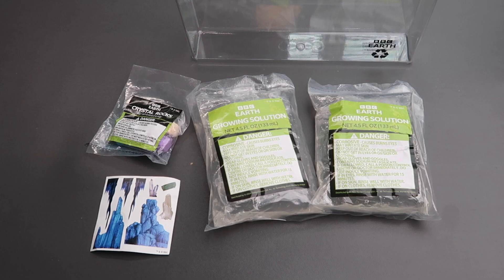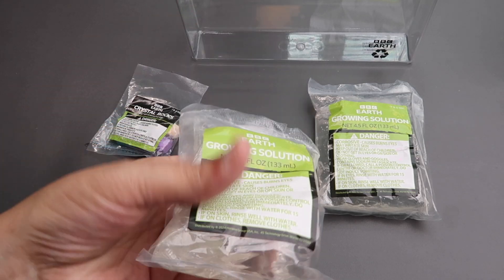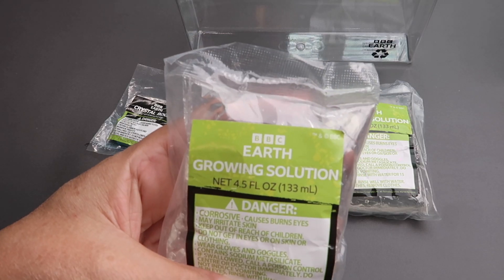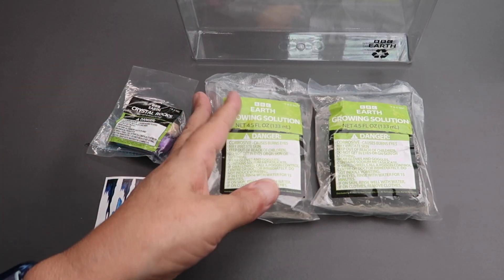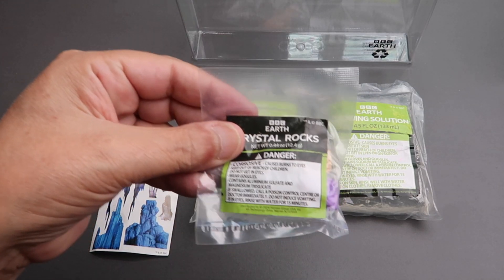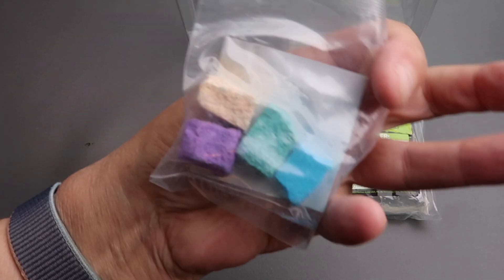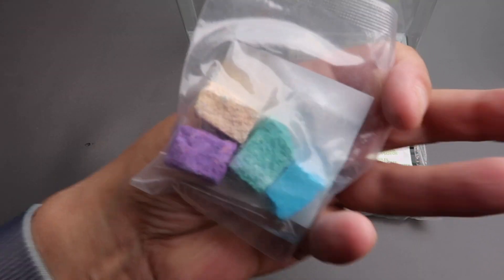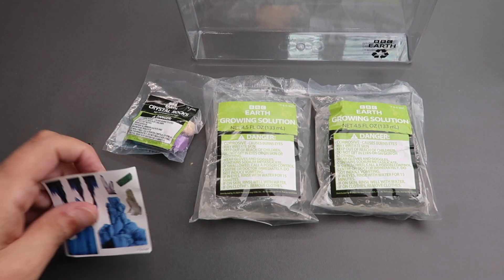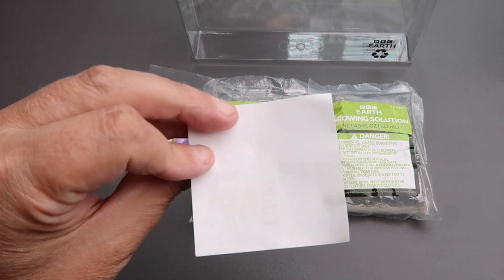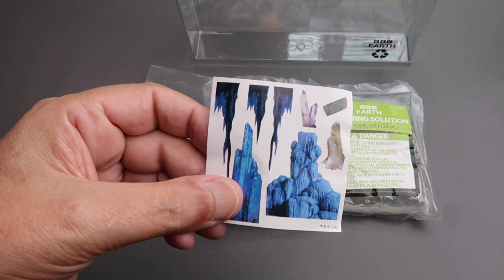And here's what you have inside that bag I showed: two bags of this gel, this growing solution, a bag of crystal rocks. Looks like there's four rocks in there, and there's a rather pitiful little display of stickers to put on the outside.